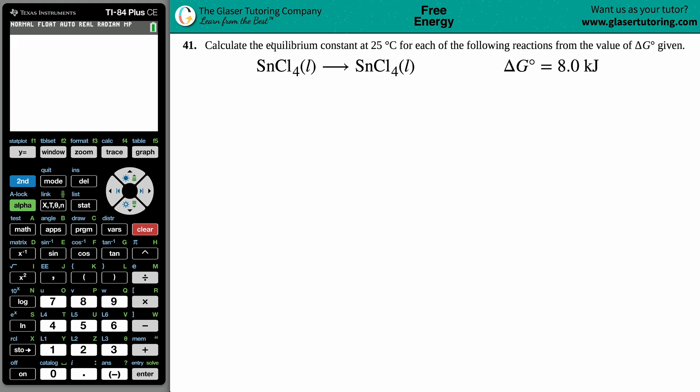Number 41: Calculate the equilibrium constant at 25 degrees Celsius for each of the following reactions from the value of delta G naught given. So now we have SnCl4 liquid which turns into SiCl4 liquid. Hmm, interesting. We're just going to keep rolling with it.